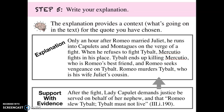Then go back into your paragraph and write your explanation — that's why I'm calling this writing inside out. The explanation provides context for the quote: what's going on in the text. So I gave a little plot summary here. The explanation is: only an hour after Romeo married Juliet, he runs into Capulets and Montagues on the verge of a fight. When he refuses to fight Tybalt, Mercutio fights in his place. Tybalt ends up killing Mercutio, who is Romeo's best friend, and Romeo seeks vengeance on Tybalt. Romeo murders Tybalt, who is his wife Juliet's cousin. This comes before the support with evidence and introduces the quote.